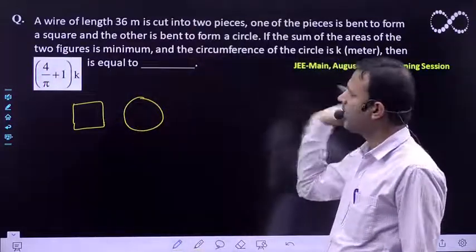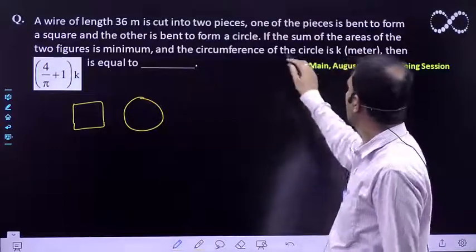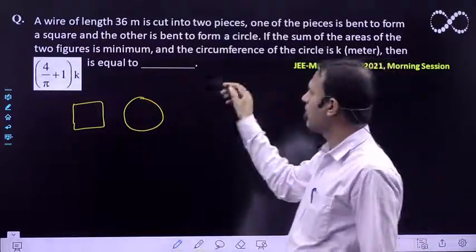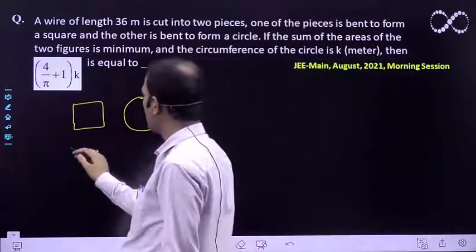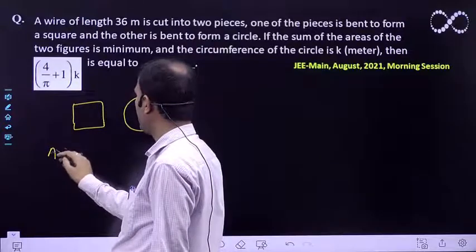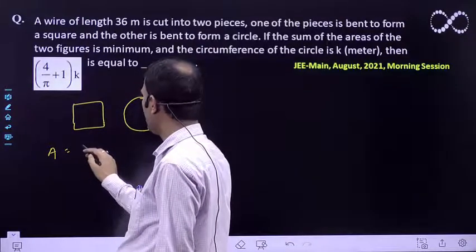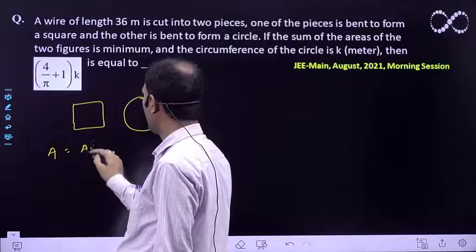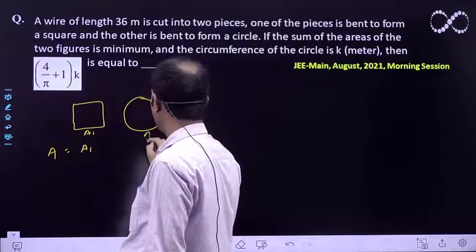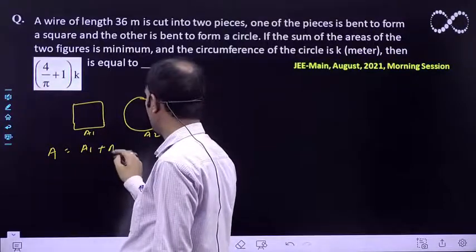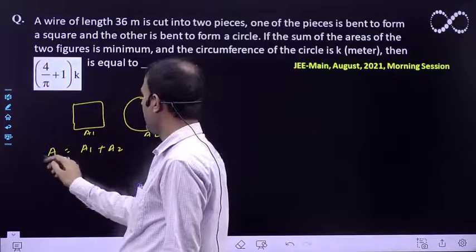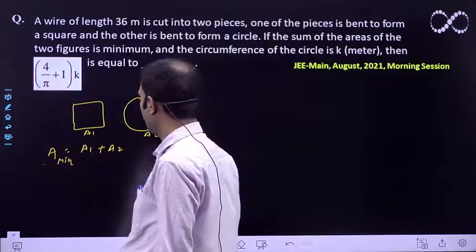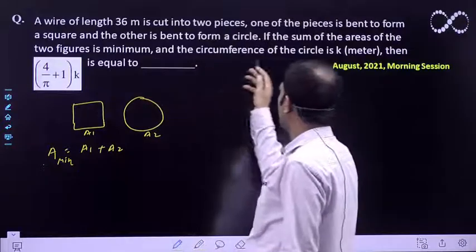The perimeter plus circumference is 36. If the sum of the areas of the two figures is minimum, we need to find the minimum area. Let A1 be the area of the square and A2 be the area of the circle. This sum should be minimum.